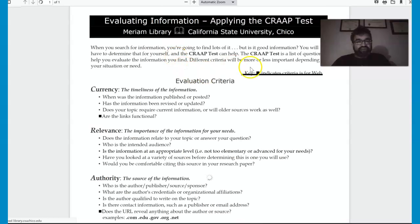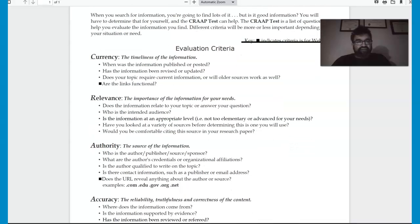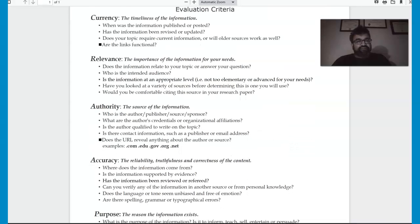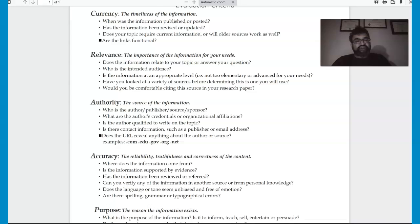So I'm going to share with you now the actual list of questions that you can be asking for CRAP. So there's currency. The timeliness of the information, that's important. I already went over this. And I'm going to quickly go over this. I'm not going to belabor any of the points, because I've explained this multiple times in places. But currency is when was information published or posted?